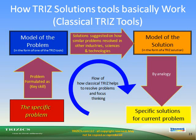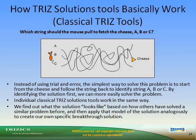This slide shows how the flow of classical TRIZ solution tools works: start by defining the specific problem, then reformulate it into a model of the problem using one of the TRIZ tools. The solution suggests how similar problems were solved in other industries, science, and technologies. We then use a model of the solution in the form of a TRIZ solution and, by analogy, find specific solutions for the current problem. In the mouse-and-string diagram example — which string should the mouse pull to fetch the cheese, A, B, or C? — instead of trial and error, start from the cheese and follow the string back. By identifying the solution first, we more easily solve the problem. Classical TRIZ tools work the same way.